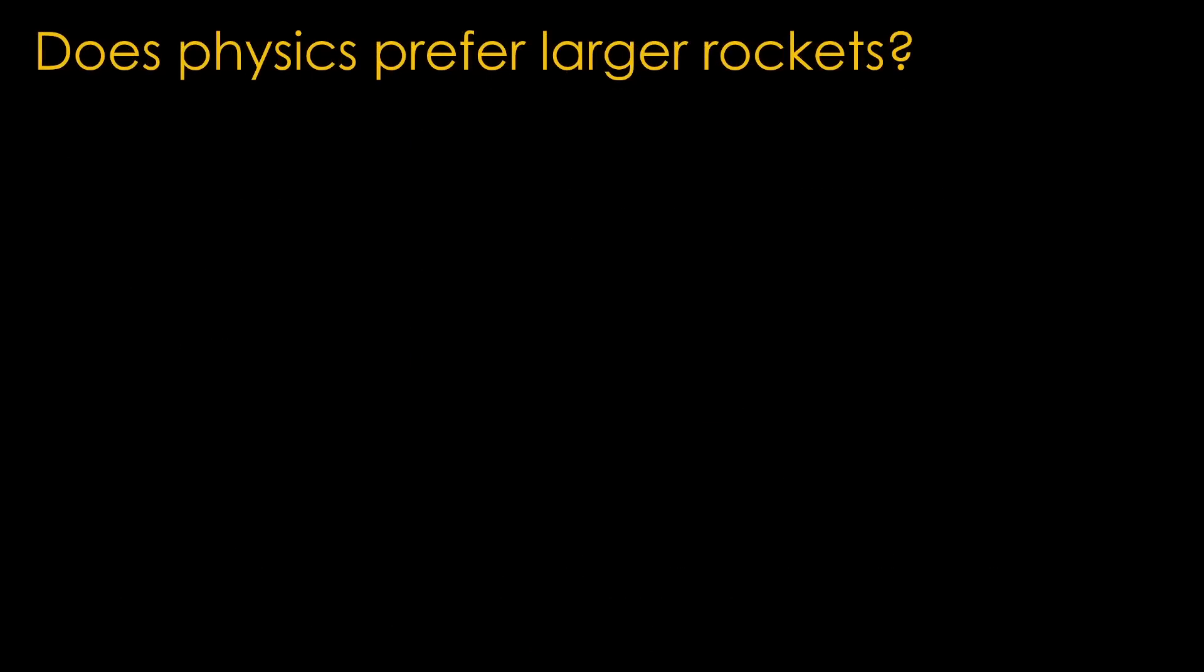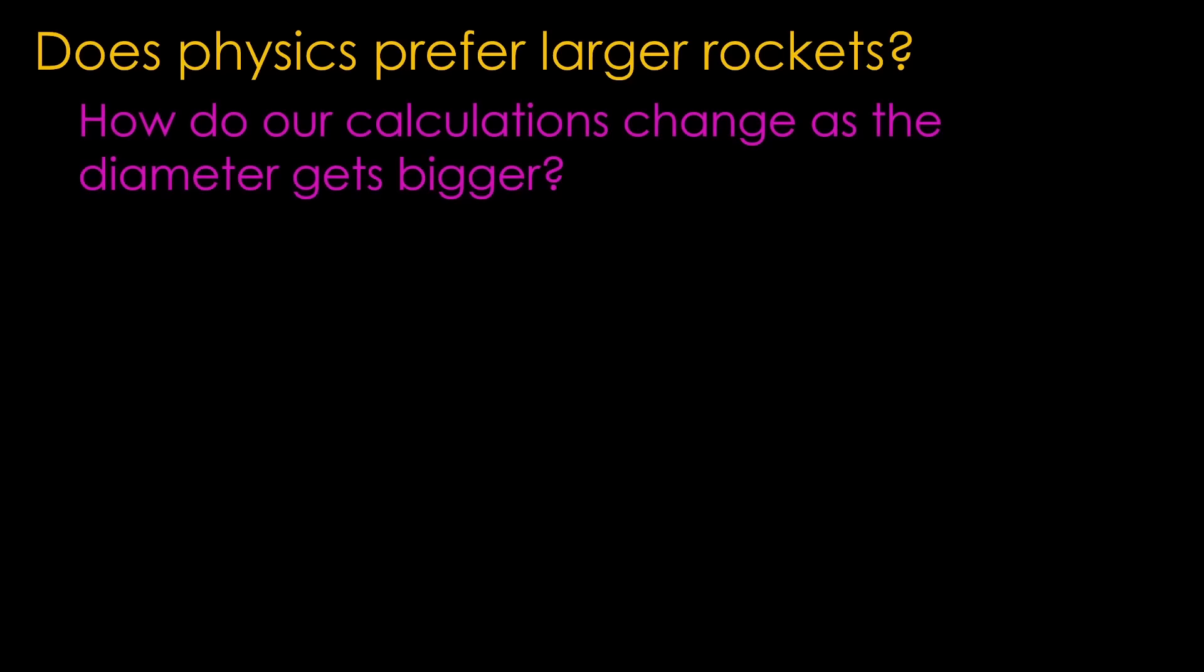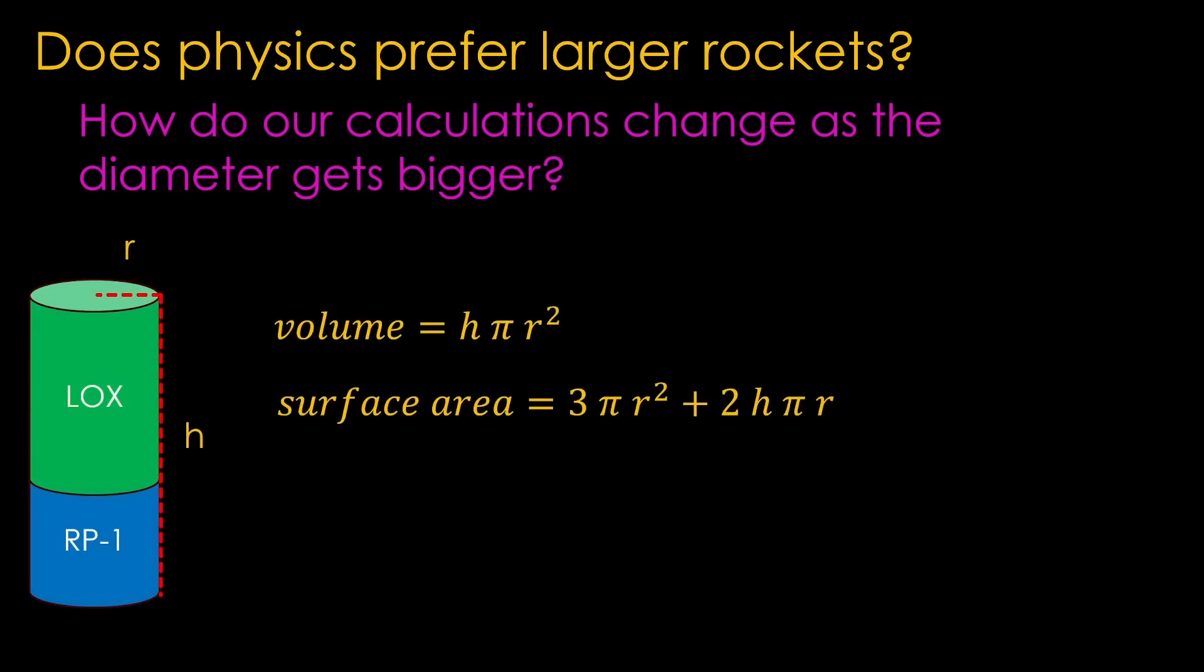Back to the original topic, which is whether physics prefers rockets of unusual size, and therefore would a large starship be better. Or to put it another way, how do our calculations change as the diameter gets bigger? I have rearranged our equations a bit so that things are a bit clearer. If we look at these two terms, both have pi times r squared in them, but the volume is h times that, and the surface area is only 3 times that, so if h is more than 3, increases in the radius will cause the volume to increase faster than the surface area. If we look at these two terms, we can see that the first one uses radius squared, while the second one uses radius, so once again the volume will increase faster.